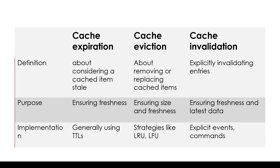Moving on to the purpose: when we talk about cache expiration, the goal is to ensure that the cached data remains fresh and up to date, and we do it by periodically checking and updating the cache. Cache eviction has a similar goal — it not only ensures that the most relevant and frequently accessed data is retained in the cache, but it also manages the size of the cache.